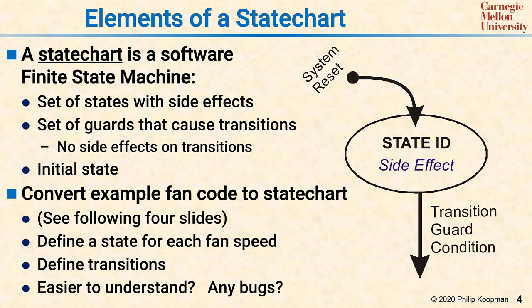We'll do this by first defining a state for each fan speed. It's a three-speed fan, so there'll be four states, one for each speed plus the off state. We'll define the transitions, and then we'll ask, is it easier to understand the state chart than that code we showed you, and which one is easier to find bugs in?